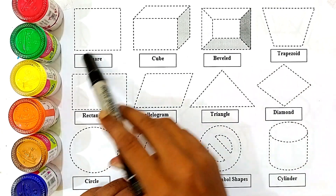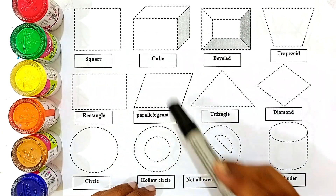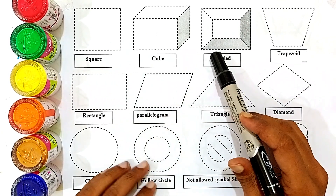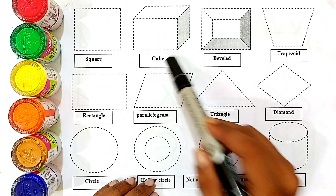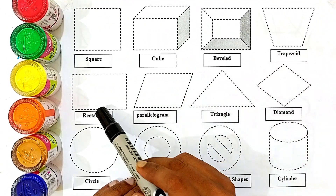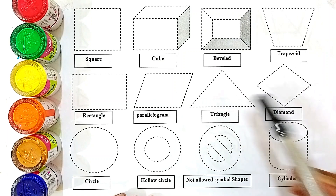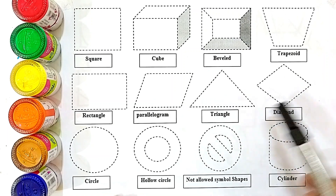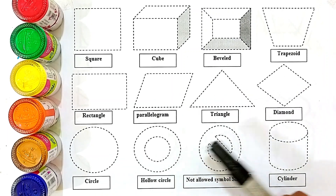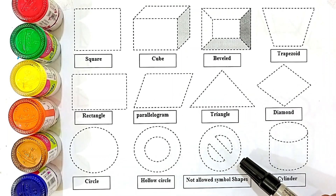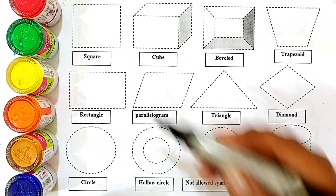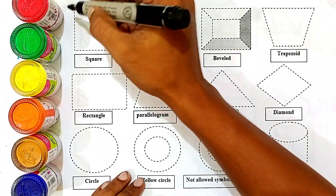Hello kids, let's learn some shapes and coloring and drawing the shapes. Square, cube, bevel, trapezoid, rectangle, parallelogram, triangle, diamond, circle. Hello circle, not allowed symbol shapes, cylinder. Let's draw the shapes.